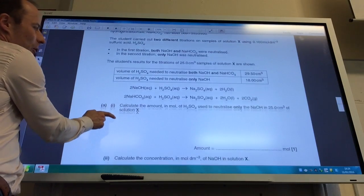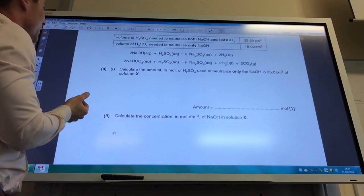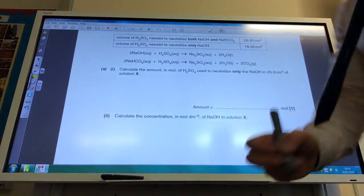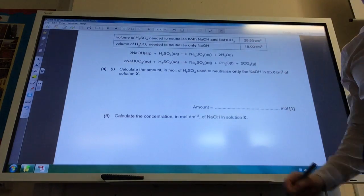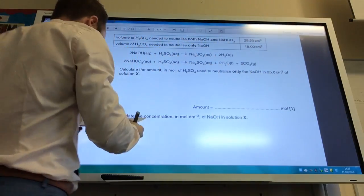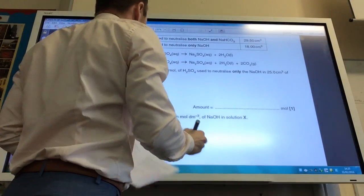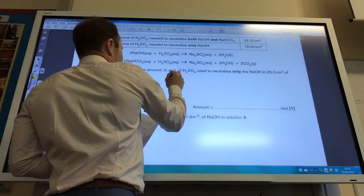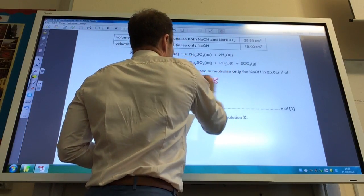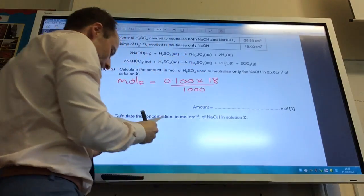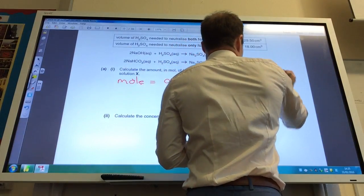The first thing they want me to do is calculate the amount in moles of sulfuric acid used to neutralize only the sodium hydroxide, so it's going to be this number up here. So let's do that. We know that moles equals concentration, which is going to be 0.100, times volume, which is 18 over 1000, and if you do that, you get 0.0018 moles.